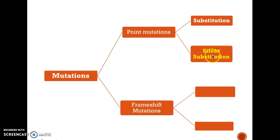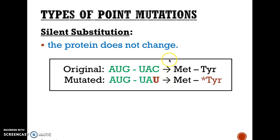The second type is a silent mutation or silent substitution. A silent substitution is when you change a nucleotide — so you had the original UAC but changed it to UAU — but there is no change in the amino acid that codon codes for. Remember that different codons will sometimes code for the same amino acid. UAC codes for the same amino acid as UAU, so we call that a silent substitution.